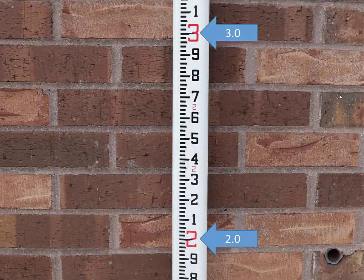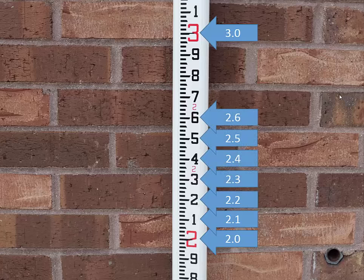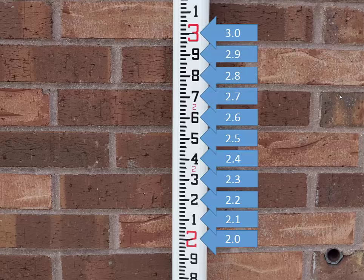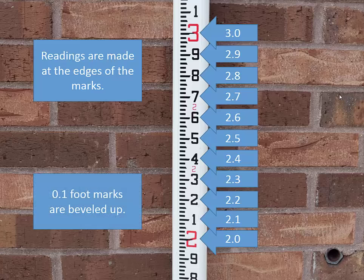The large red numbers on this level rod are one foot apart. Each one-tenth fraction of a foot is marked with a black number. Specifically the top edge of the long mark at the left edge of each black number marks the one-tenth increment. Look closely and you'll see that each tenth mark has its right end beveled up. That is, the point of the bevel is on the edge corresponding to the tenth of a foot.